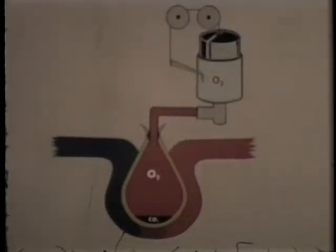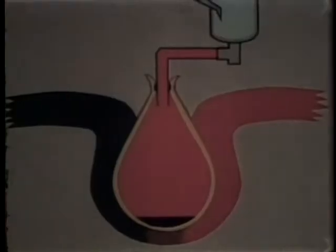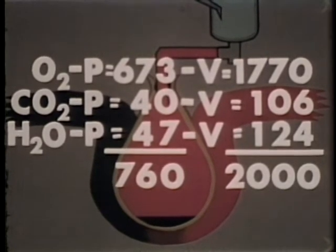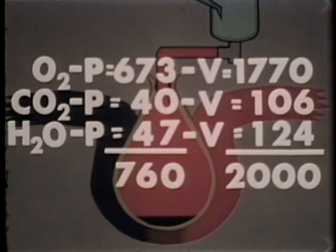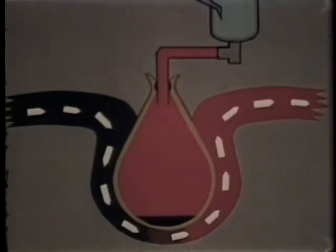We shall represent total lung volume by a single alveolus containing 2,000 milliliters. At the end of denitrogenation and at the start of apnea, only oxygen, carbon dioxide, and water vapor are present in the lung in the following amounts: oxygen, 1,770 milliliters; PO2, 673 millimeters; carbon dioxide, 106 milliliters; PCO2, 40 millimeters; water vapor, 124 milliliters; and PH2O, 47 millimeters of mercury. We shall assume that blood flows around this alveolus in discrete quantities of 1,000 milliliters every 30 seconds.